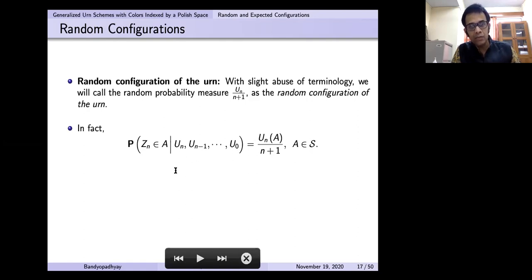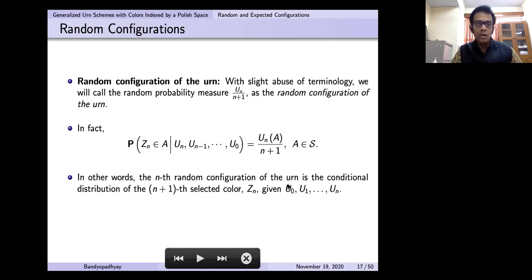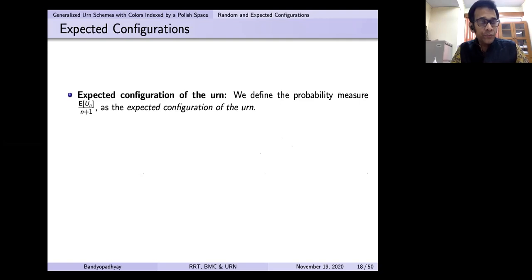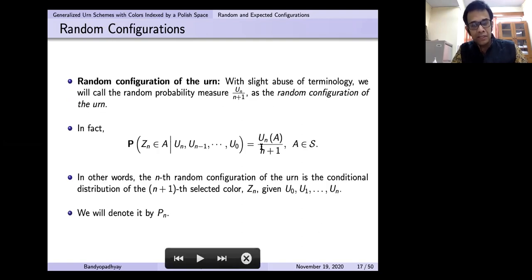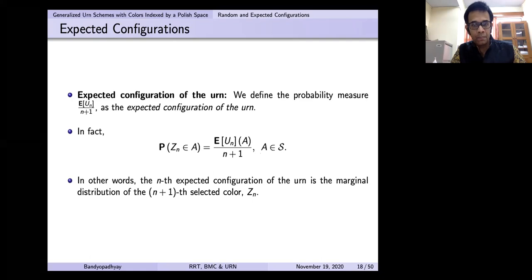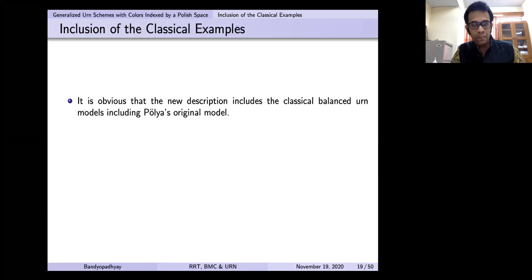We will refer to the process U_N as the ARN model with color indexed by the Polish space S — which can be potentially infinite — with initial configuration u_0 and replacement kernel R. The random configuration is U_N by n plus 1, which is a random probability on S. The only possible lack of generality is the assumption that u_0, the starting configuration, is a probability measure. This is just for this talk and can be made more general, as available in the paper. The model includes entire classes — all the classical examples, Pólya and all others.